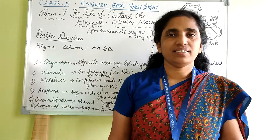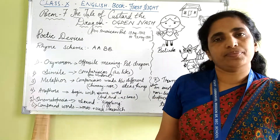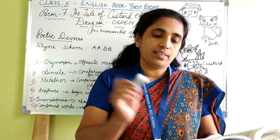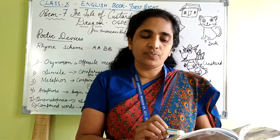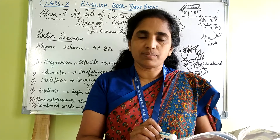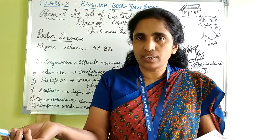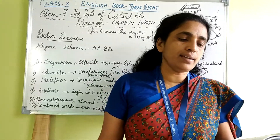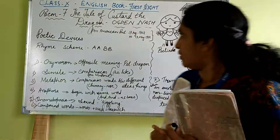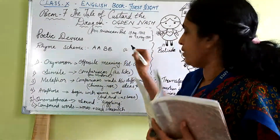Okay students, let us see the poetic devices or rhyming scheme. What is rhyming scheme, children? At the end of the line, if there is similarity or same sound or same words, we can say that is the same and we can give the same letter. Now here, Belinda lived in a little white house — we have given a rhyme scheme.